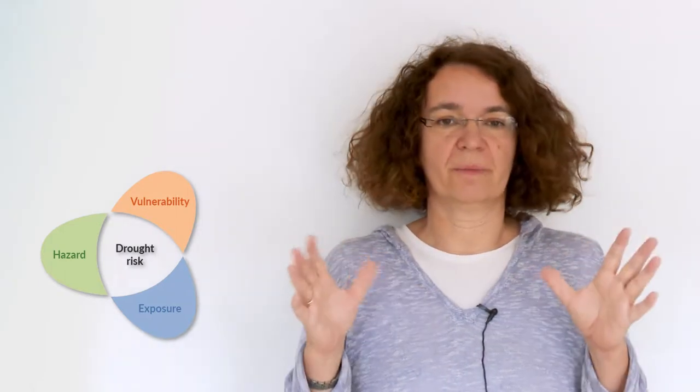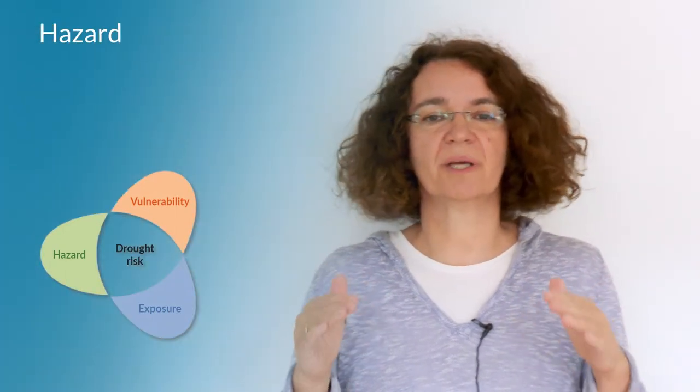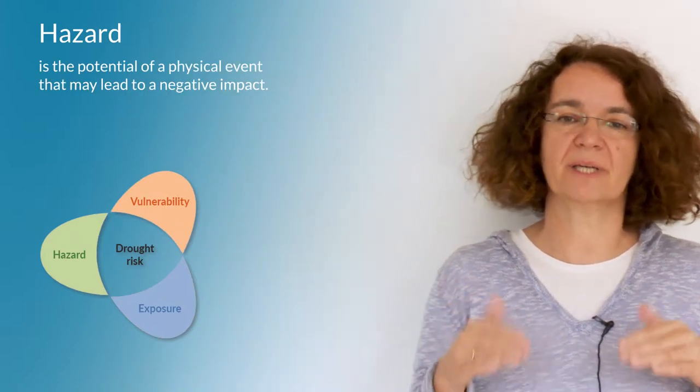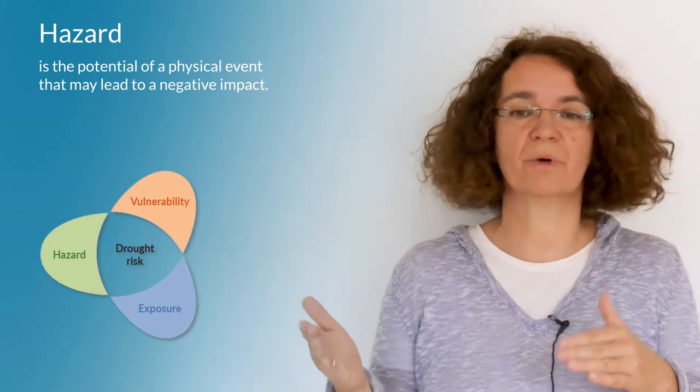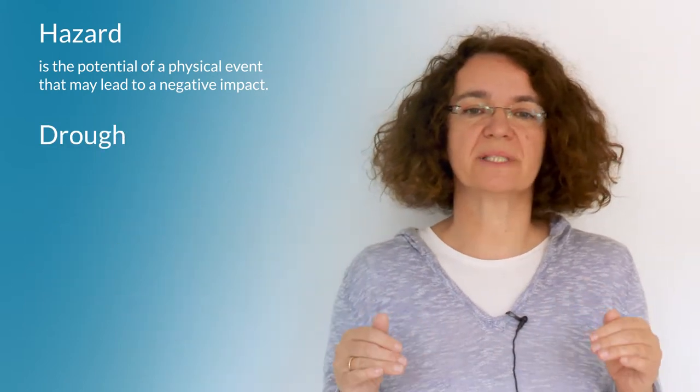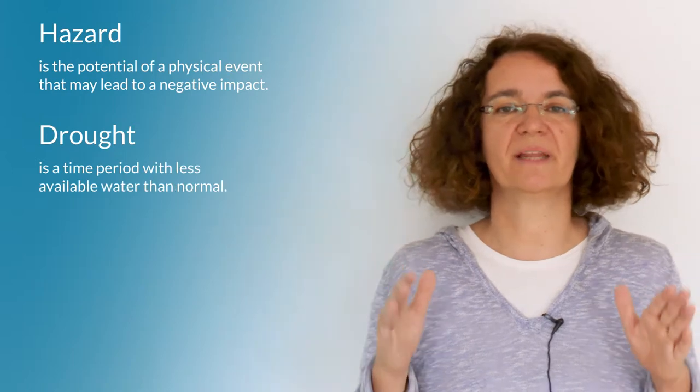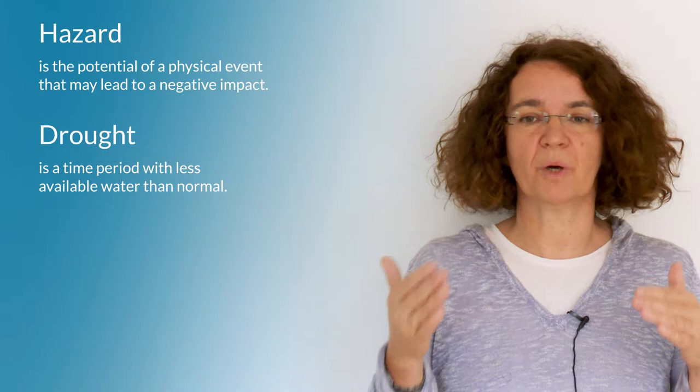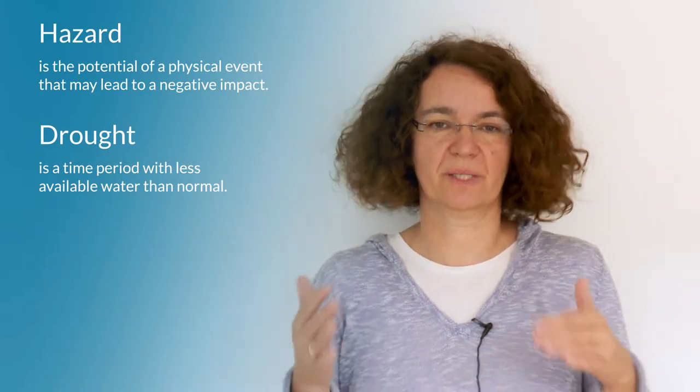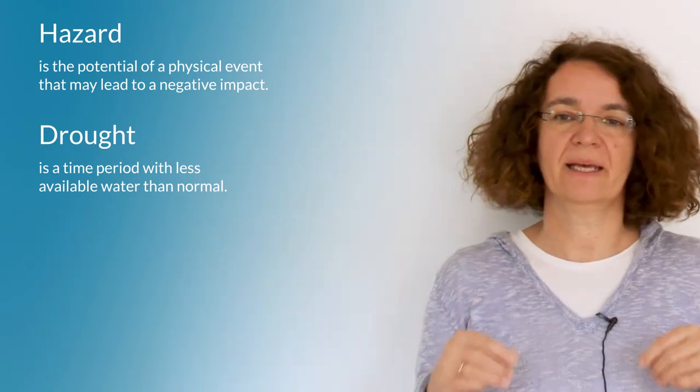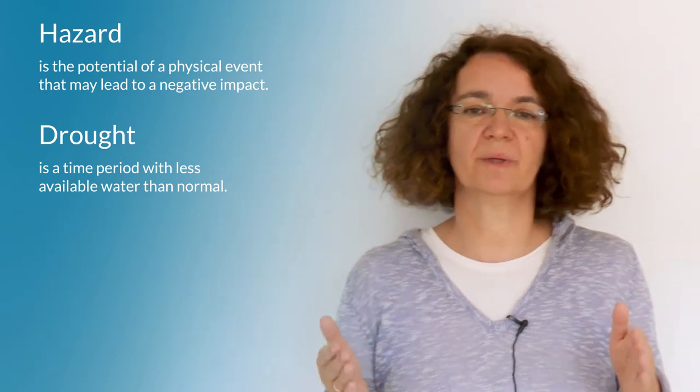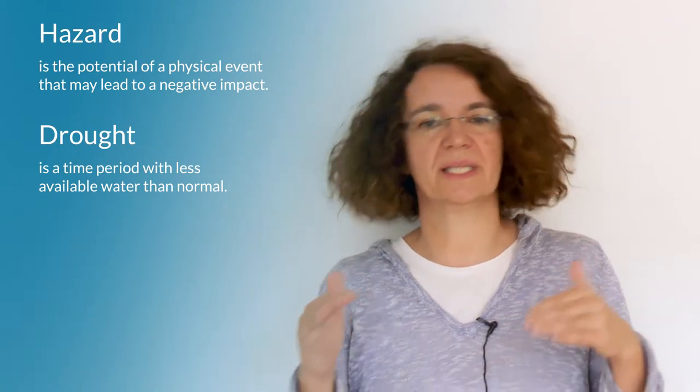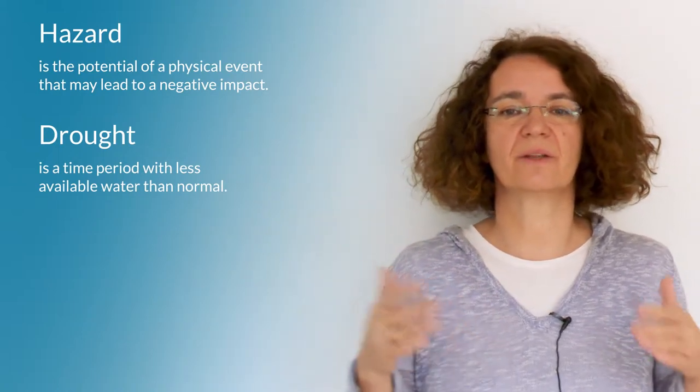When we talk about hazard in general, hazard can be called the potential of a physical event that may lead to a negative impact on someone or something. In drought risk analysis the physical event is a time period with less available water than normal that poses a risk to humans and other biota. We want to quantify drought hazard indicators that tell us about the severity, intensity and frequency of droughts.